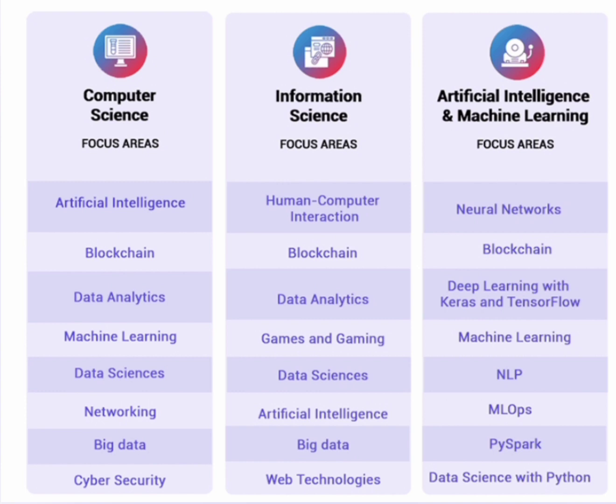AIML is a good branch when you have very strong mathematics and statistical skills. Computer science and information science also require mathematics, but they additionally require some physics understanding for networking. AIML requires a particularly strong foundation in mathematics. Importantly, the same set of companies visiting campus allow almost all branches and test students on programming languages, logic, algorithms, data handling, and data processing.